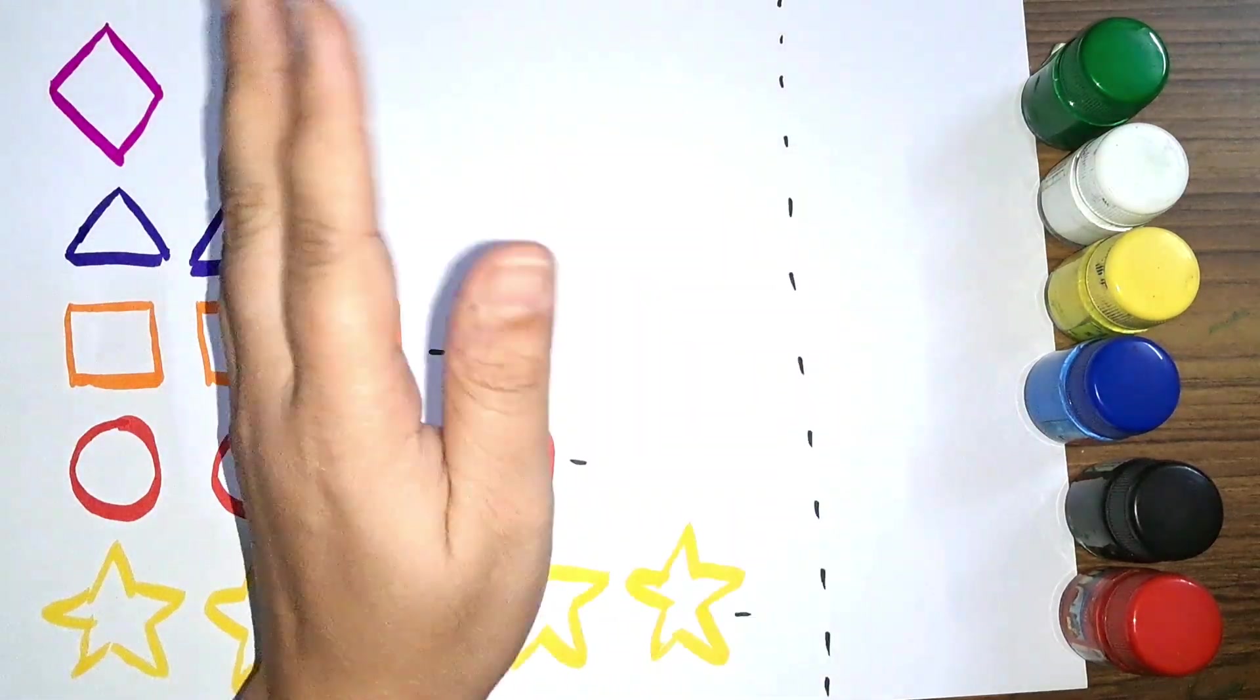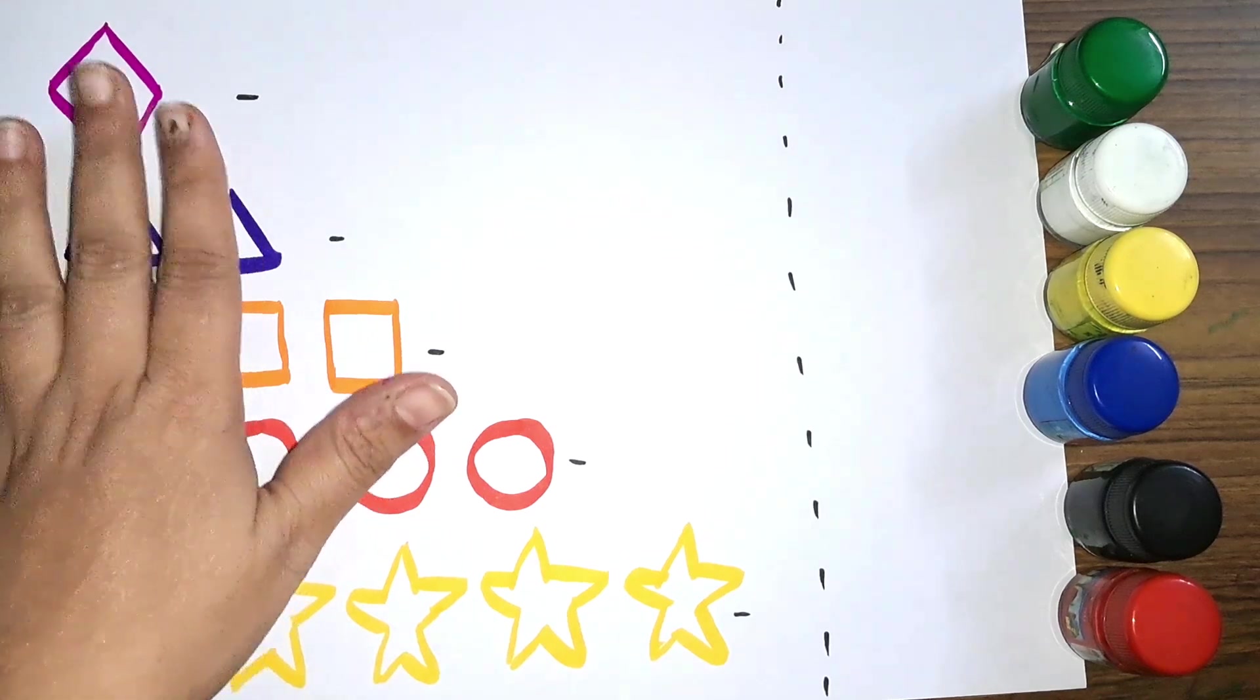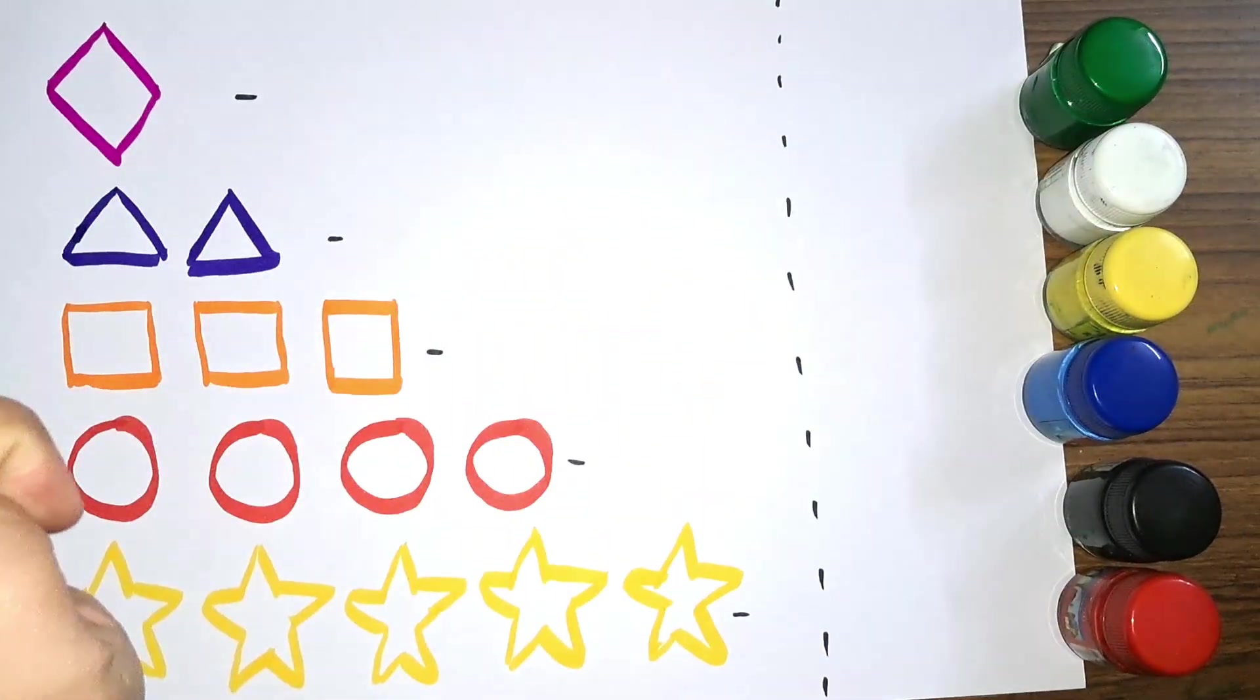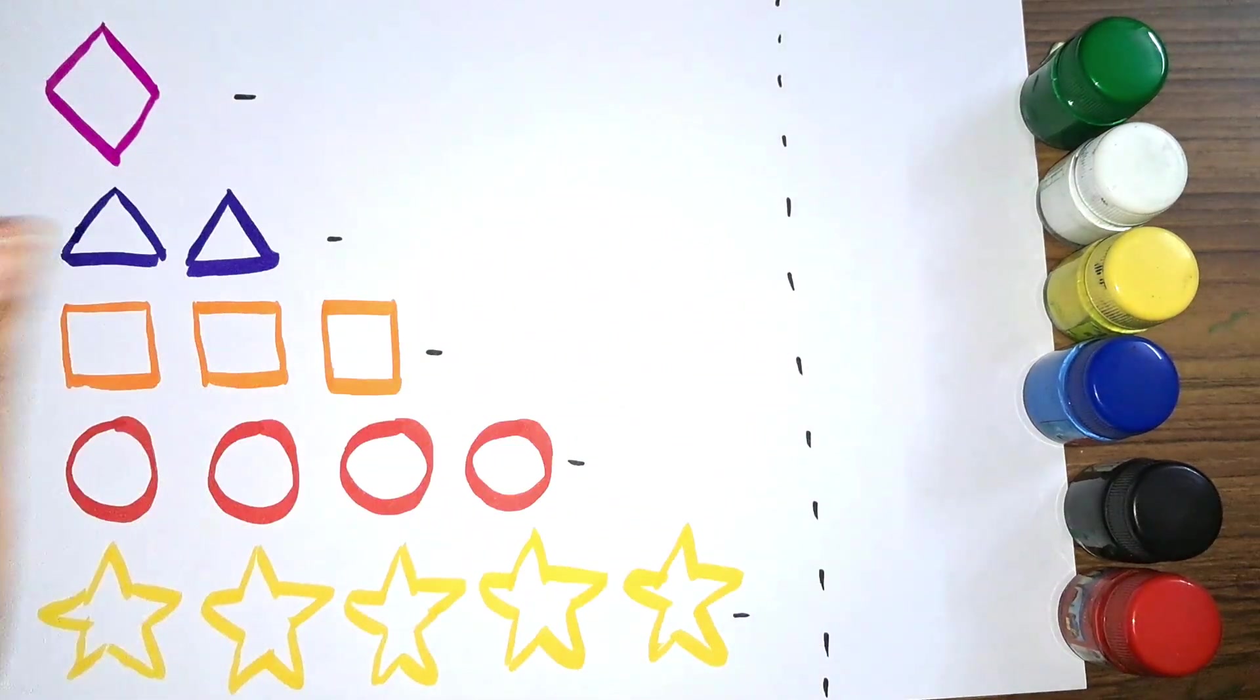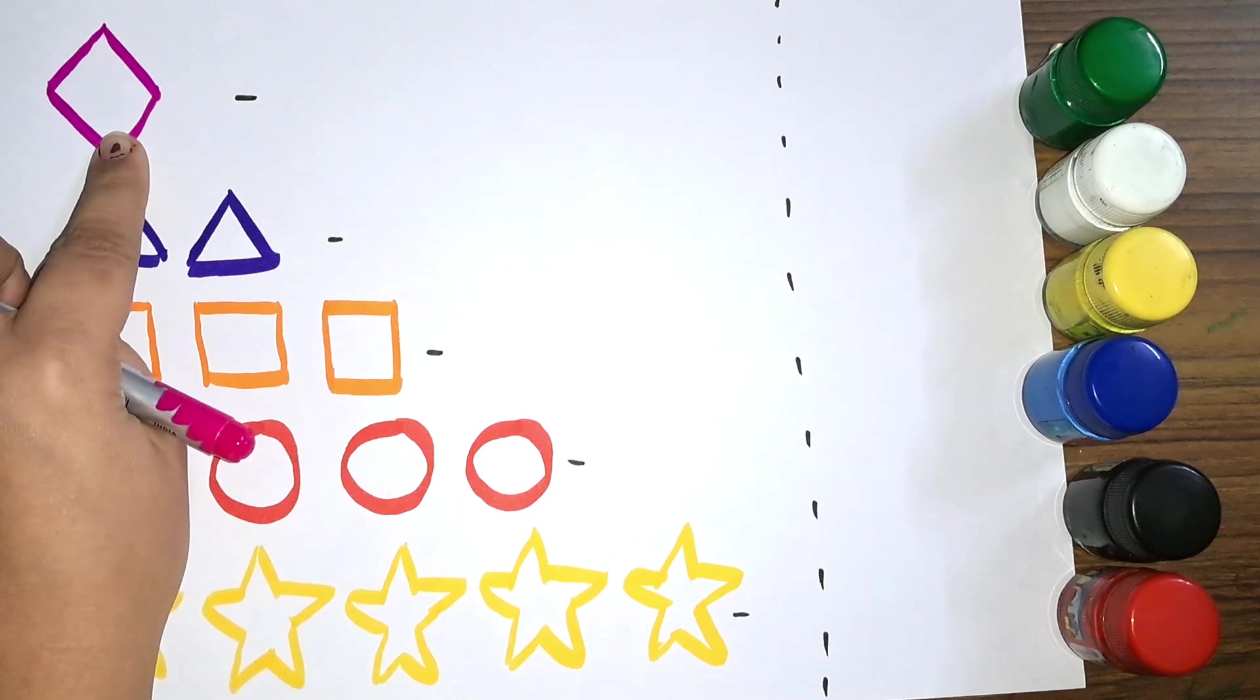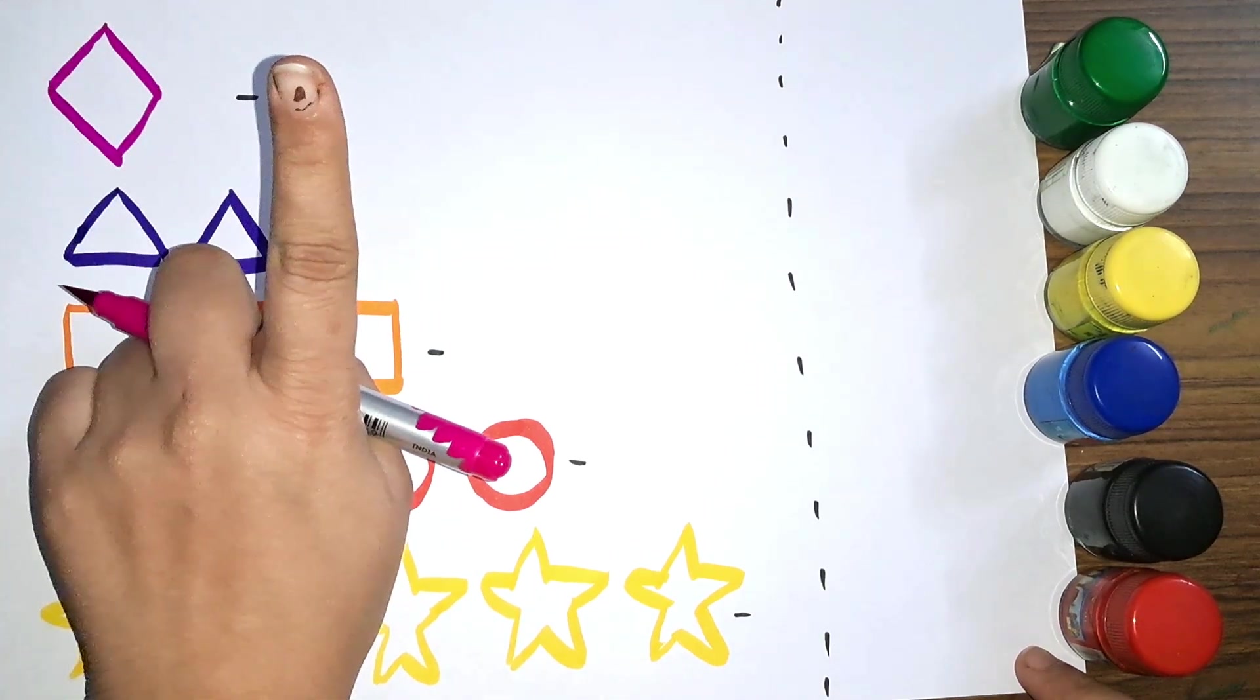Hey kids, how are you today? Let us learn some shapes, colors, and numbers. We will also write the number names. Now let's get started. First we have the shape diamond. How many diamonds do we have? One diamond.